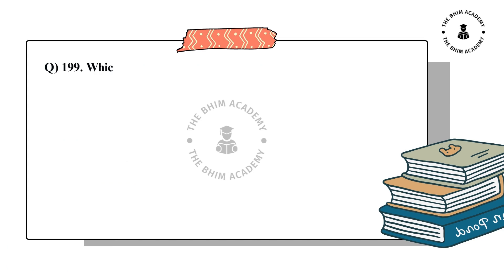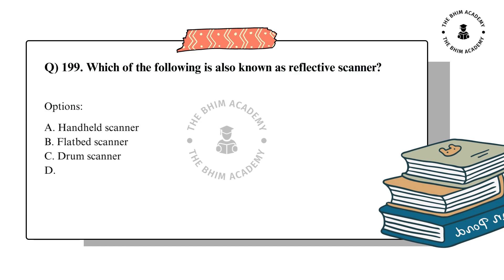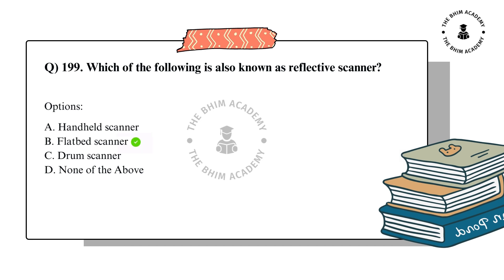Question number 199. Which of the following is also known as reflective scanner? The options are: A. Handheld scanner, B. Flat pit scanner, C. Drum scanner, D. None of the above. The correct answer is B. Flat pit scanner.